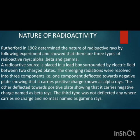One plate was positively charged and one was negatively charged, creating an electric field. Under these circumstances — with the electric field, radioactive source, lead box, and electric plates — three radioactive rays emerged: alpha, beta, and gamma.